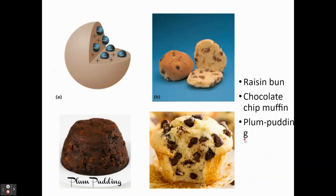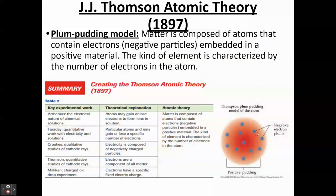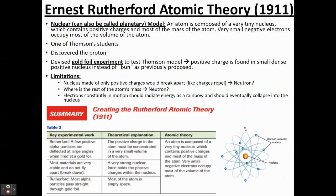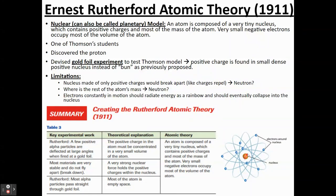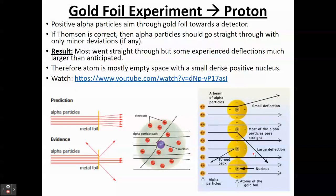That becomes known as the nucleus — the positive nucleus, or the protons. Rather than the positive bun being the positive charge like in Thomson's model, Rutherford said the atom is mostly empty space and the positive charge is in the middle: a very dense region of positive charge that the particles are hitting and bouncing off of. This is called the nucleus, with only protons in there. The electrons are then orbiting around the nucleus. This becomes the nuclear model — some sources call it the planetary model, but that's more related to Bohr.